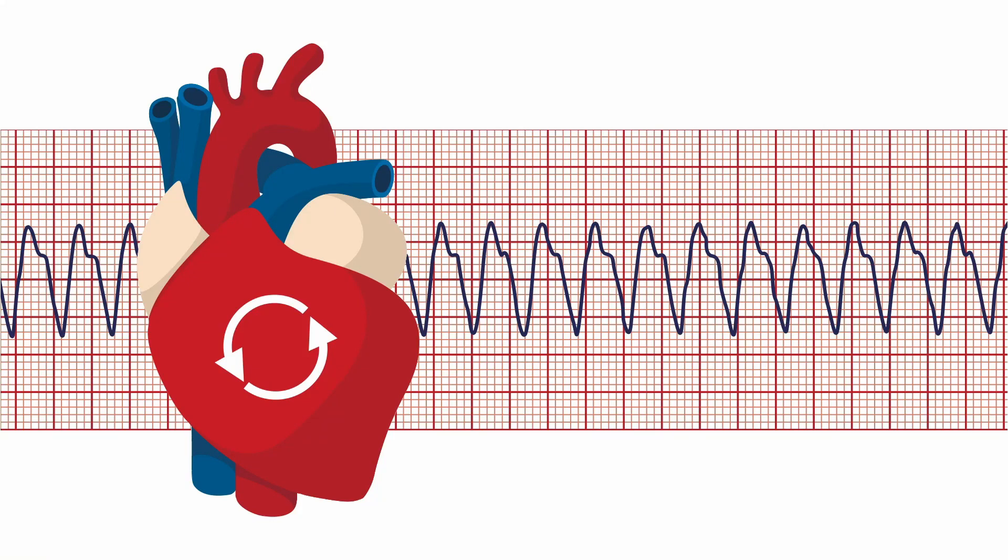If we think about VT, the reason we get a broad and wide complex is normally because we have a re-entrance circuit going on. This may be occurring around some scar tissue from an old myocardial infarction, an old heart attack.